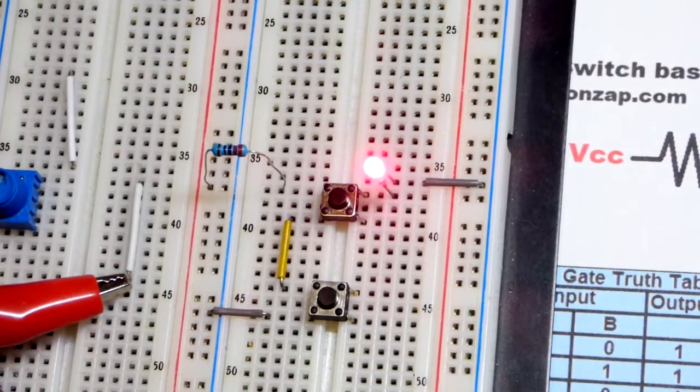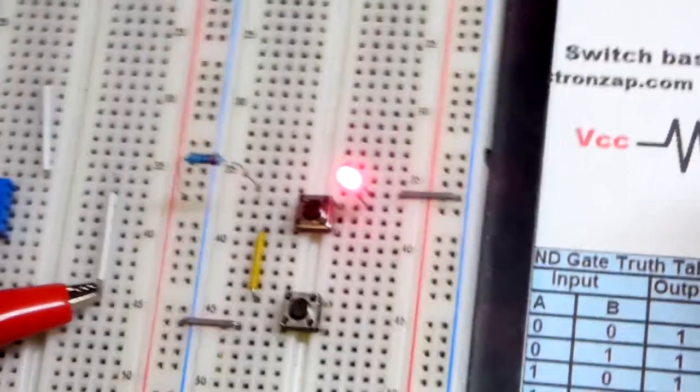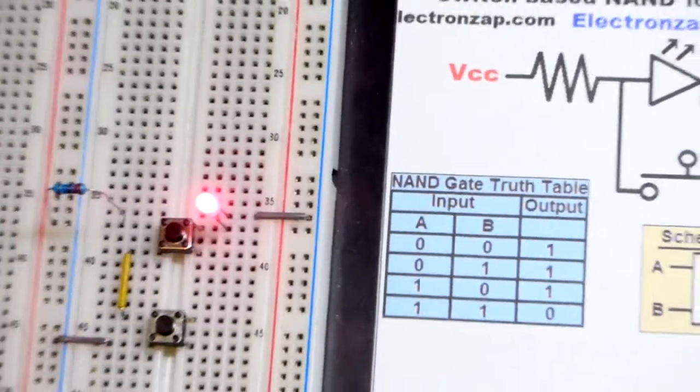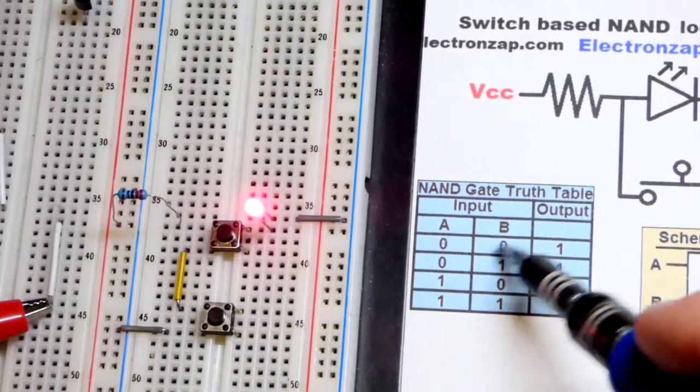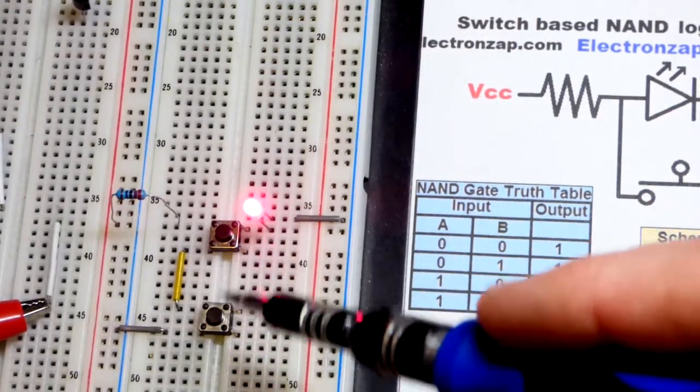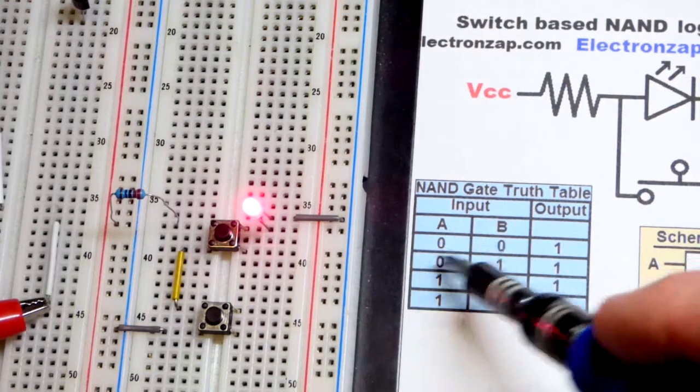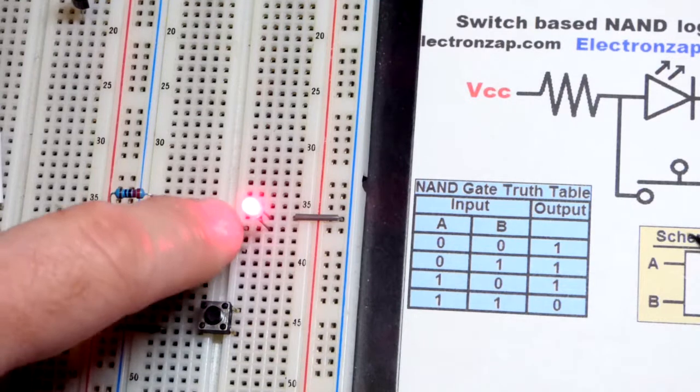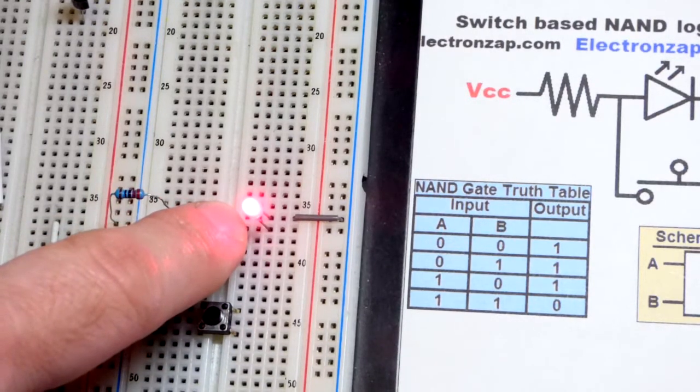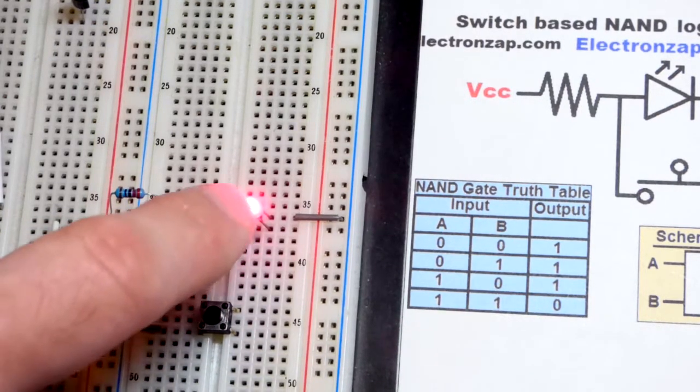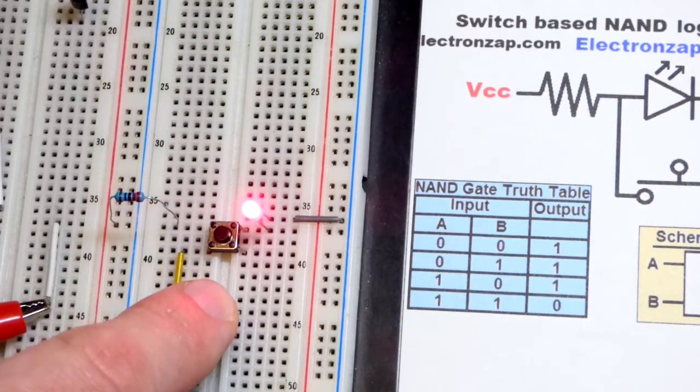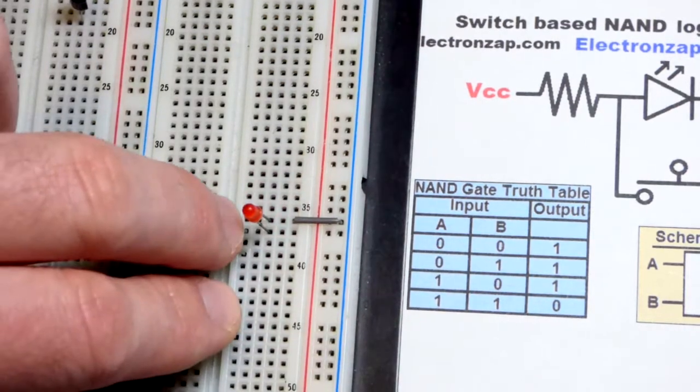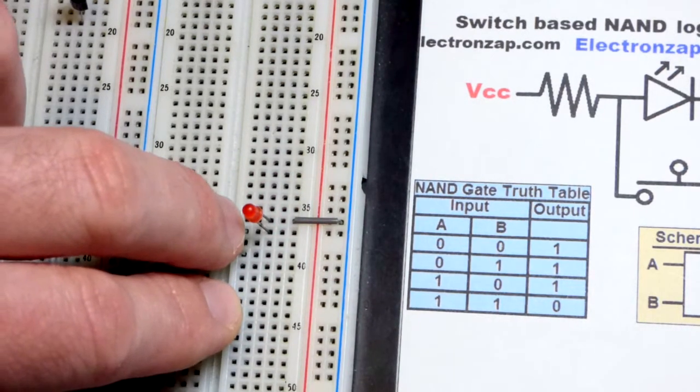So the output is high right now and we can get the truth table back and look at that. We're in this state. Both of the switches are off or zero, and since they're mechanical switches they're just on or off. They don't really have a voltage to them at the moment, they're floating. Press that button, the output stays high. Press that button, the output stays high. So we've done those three. Now I'll press both switches. Now you can see that the output goes low.